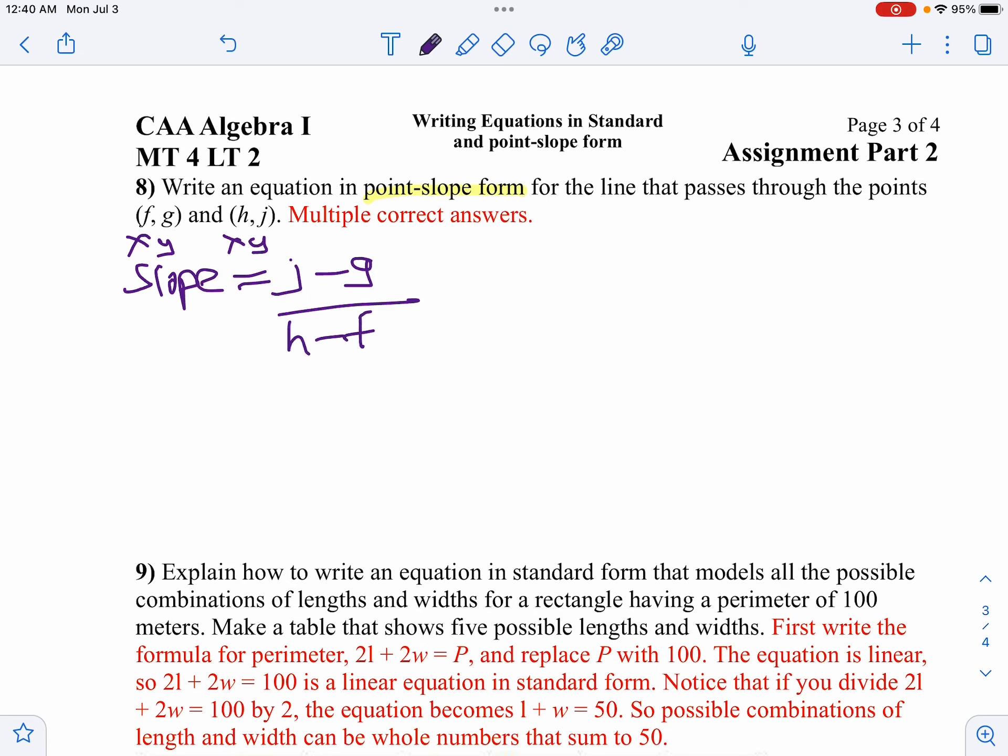Now we can write our equation in point-slope form, and I think we'll use the first point. So I'm going to say y minus g. Remember, point-slope form is y minus y1 equals m times x minus x1.